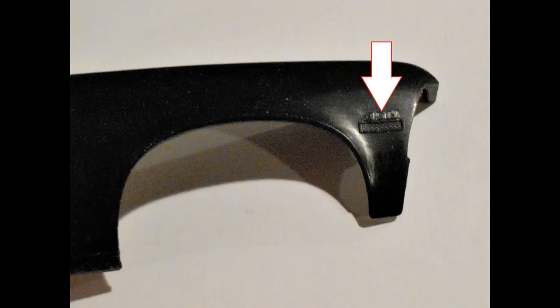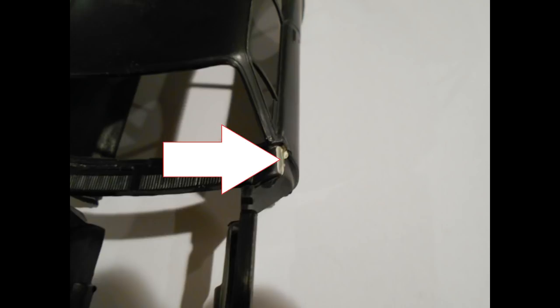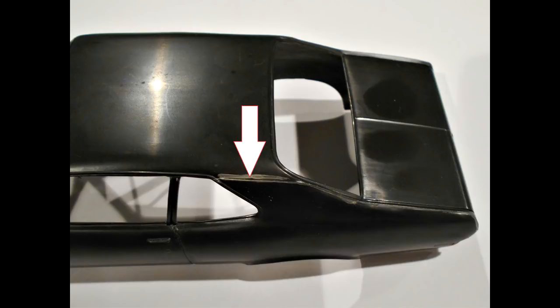On the fender, there's a script for the 350 engine. If you're building the stock version, go ahead and leave it in place. But I'm building the race version with the 454, so I decided to scrape it off with a blade and then sand it smooth. There's some flash on the inner fender well next to the door jamb on the driver's side and along the C-pillar in the back. So sand those smooth.